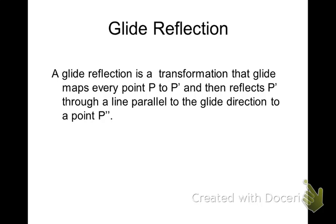A glide reflection is a transformation that takes a point from one spot and then moves it to another spot and then reflects it to a third spot. So that's what a glide reflection is going to do for us.